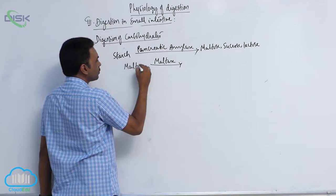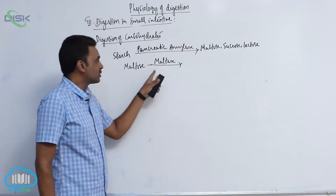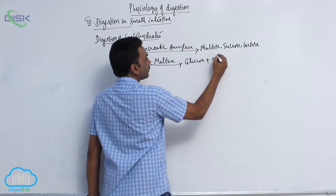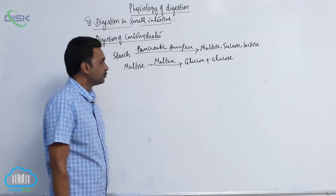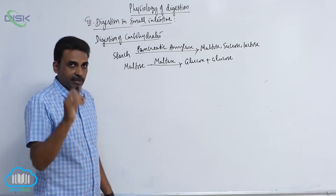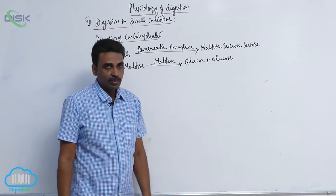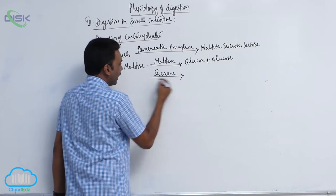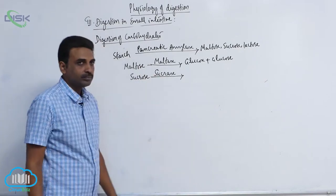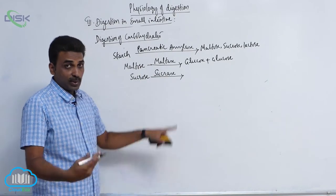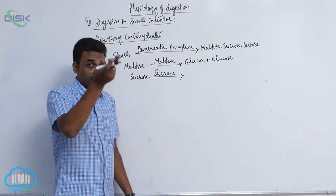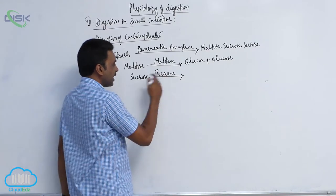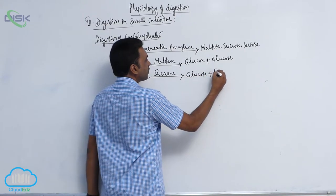Maltase, coming from intestinal juice, acts on maltose — which contains two units of glucose — separating both glucose units to produce two glucose molecules. Sucrase (also called invertase or invertase) acts on sucrose to produce glucose plus fructose.